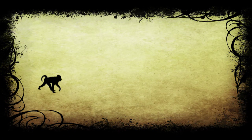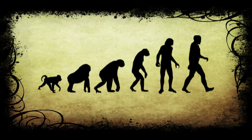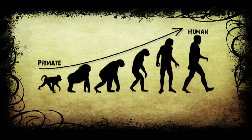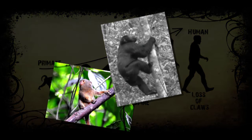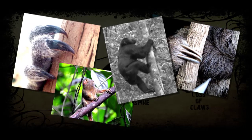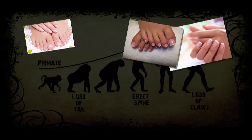At some point we have all seen images of human evolution and its stages. Evolution is a process that brings about physical changes in a species that helps in its survival. In the evolution of humans, we lost certain features like our tail. Amongst some major changes we also lost our claws — but not completely. Our claws, which were used for climbing trees or cracking fruits and nuts, have been modified into flattened structures which we now call nails.